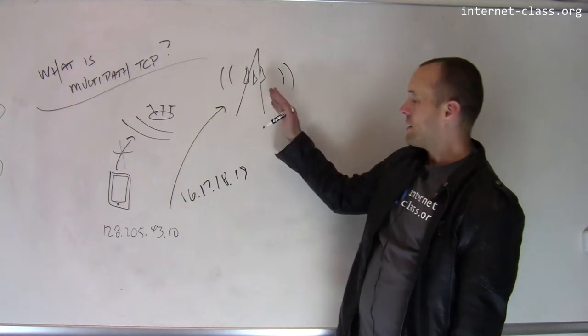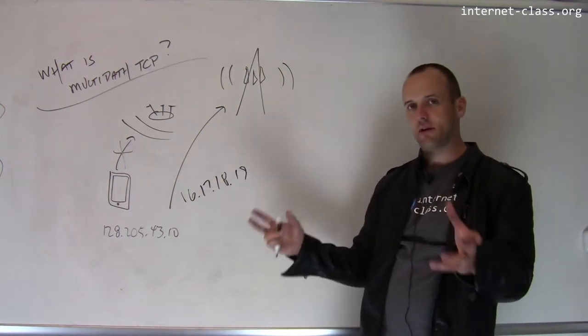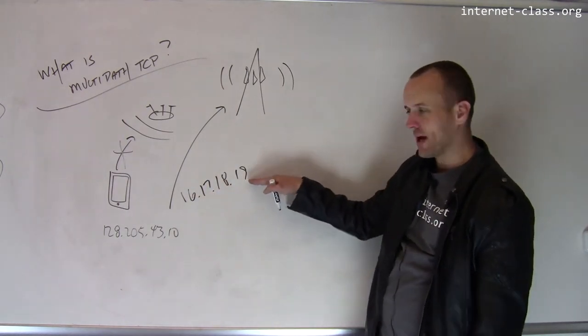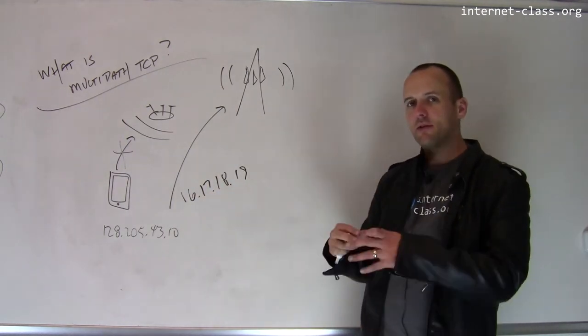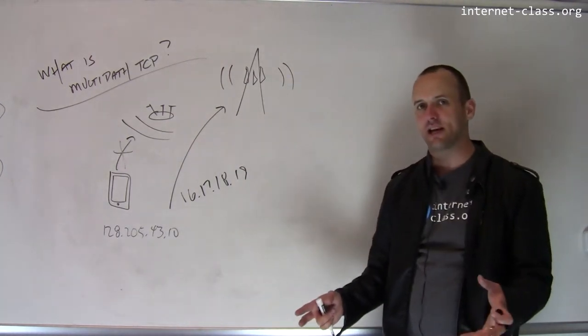Now the problem is, you have this other connection, you can reconnect to the LTE network that you're paying to use. But the connection has a new IP address and TCP was not designed for this. TCP was not designed for the IP address to change during the connection.